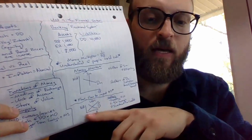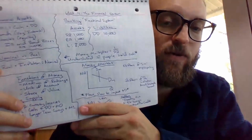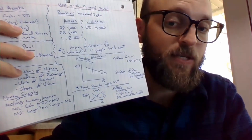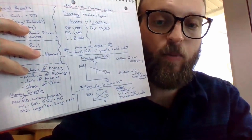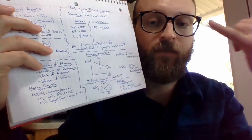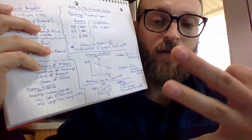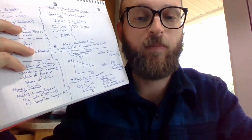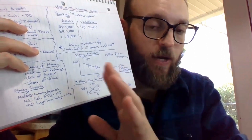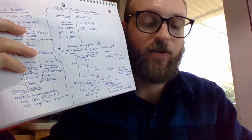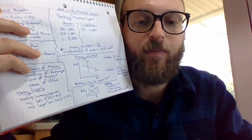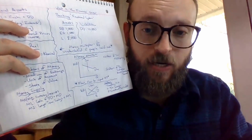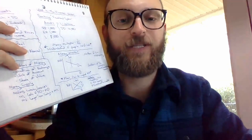The last two things are the money market graph and the loanable funds market. The money market graph can be invoked for a lot of reasons, but most likely on the exam it's going to have to do with monetary policy — not fiscal. Fiscal is taxing and spending; monetary policy is what the Fed does. You have three flavors: open market operations, discount rate, and reserve ratio. Open market operations are almost always used on the exam. Buy bonds and the money supply gets bigger, shifting right. Sell bonds and the money supply gets smaller, shifting left. Expansionary policy means lowering the discount rate or lowering the reserve ratio; contractionary means raising them.